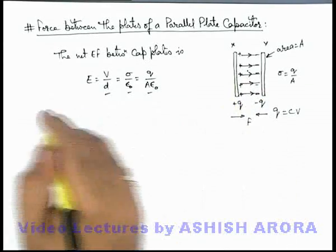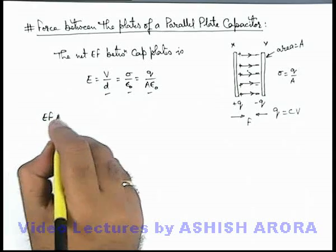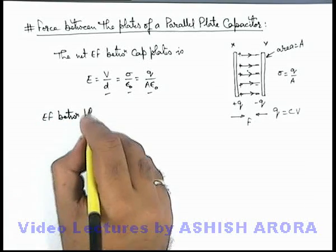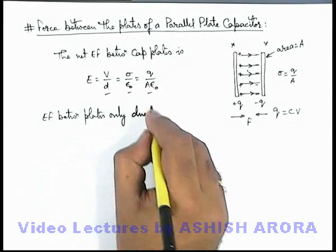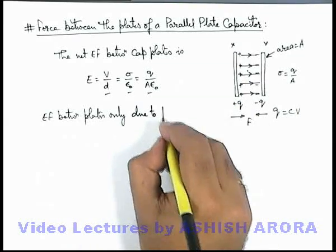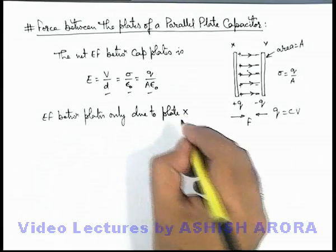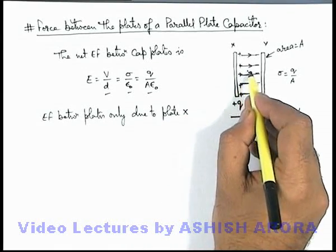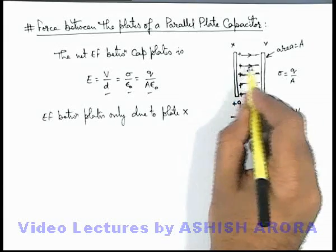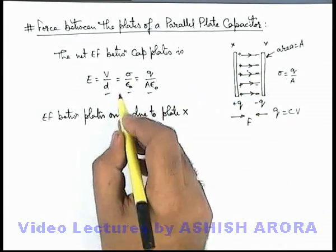But if we calculate the electric field between plates only due to one plate, or here only due to plate X, then we know that only due to one plate electric field between the plates will be sigma by 2 epsilon not. And it is due to both of these plates it is sigma by epsilon not.